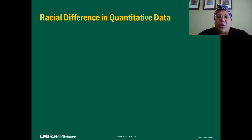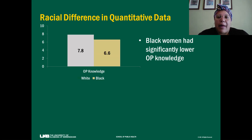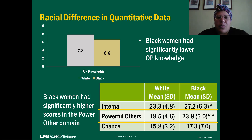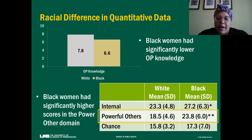With respect to the quantitative data, we did see that Black women had significantly lower knowledge about osteoporosis based on the Osteoporosis and You scale, which is scored out of 10. White women had a score of 7.8 and Black women had a score of 6.6. With respect to multidimensional locus of control, Black women had a significantly higher score in the powerful others domain, indicating that someone else is more in control of healthcare and health decisions.